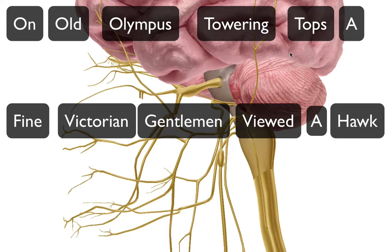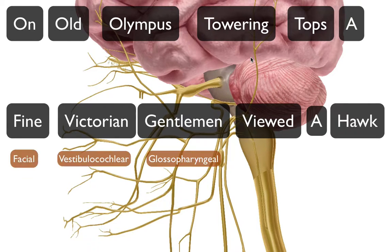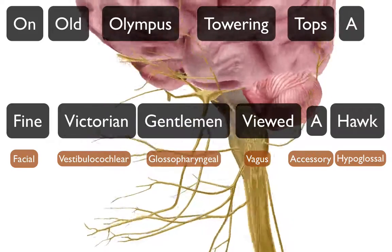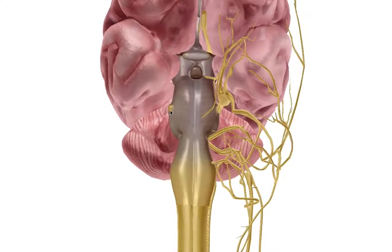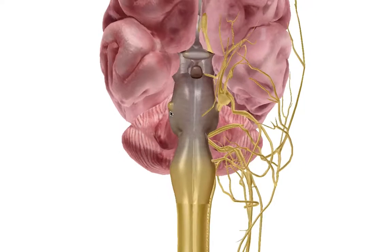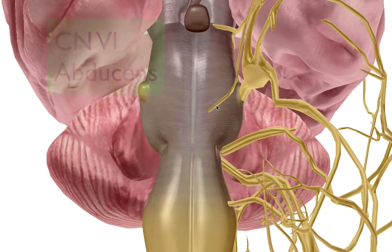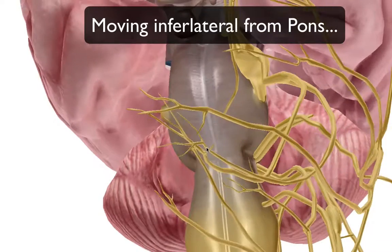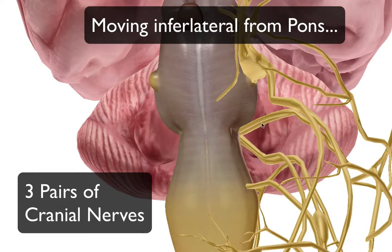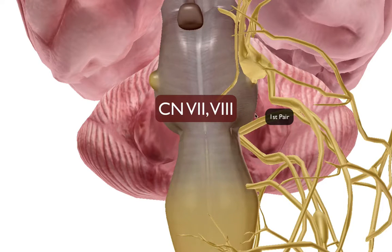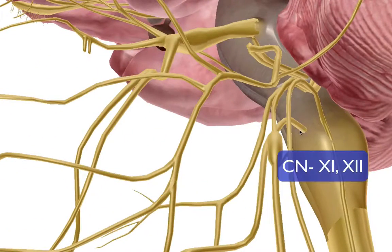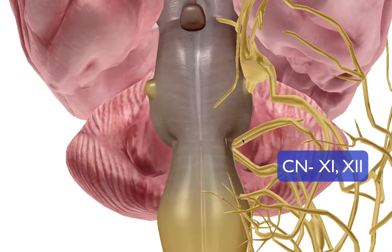The mnemonic covers the last six nerves: facial, vestibulocochlear, glossopharyngeal, vagus, accessory, and hypoglossal. Looking at a view of the base of the brain, having finished with cranial nerve six, I'd like to break the next six nerves into pairs: cranial nerves seven and eight, nine and ten, and eleven and twelve.